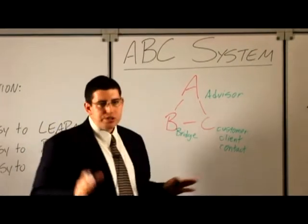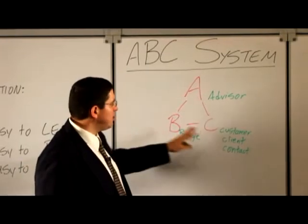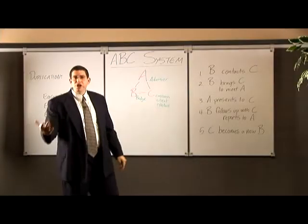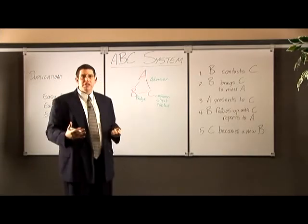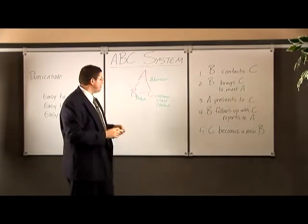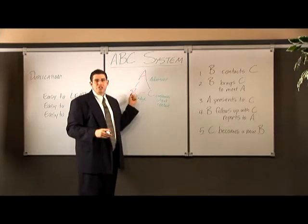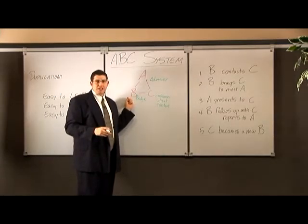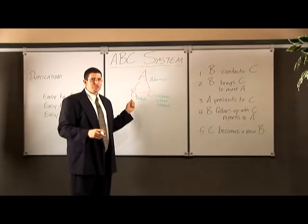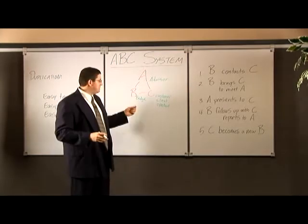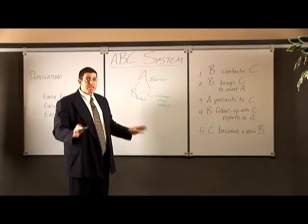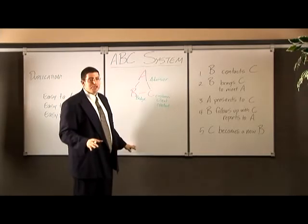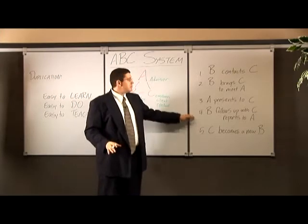When you start out in this business, you actually probably start out as a C. Somebody contacted you. Somebody approached you. You tried the products. You listened to the business. You say, you know, I want to get involved. Now you're watching this video because you now are ready to take your first step as a B. This is where the business starts. If you remember in our diagrams, we use B for business builder. You're starting as a bridge because that's the basics for the business builder. This is the basics for network marketing and how you're going to build your business.